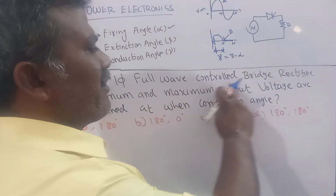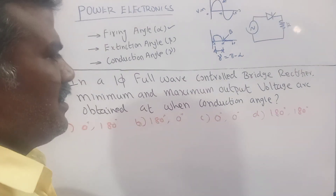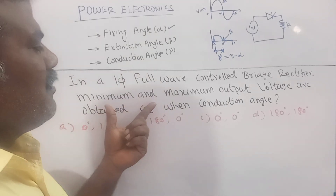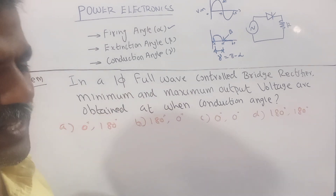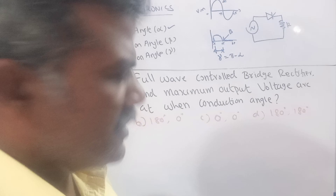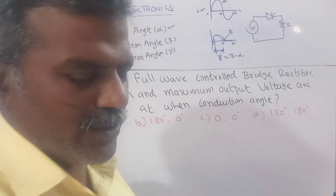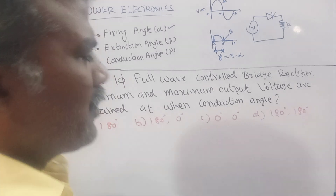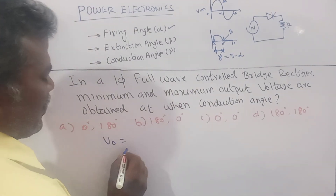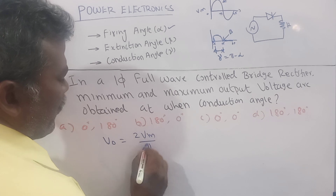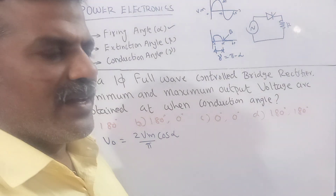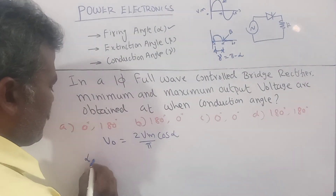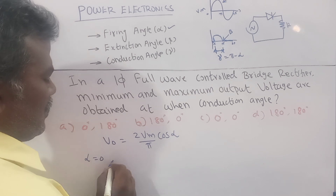For a single phase full-wave controlled bridge rectifier, the minimum and maximum output voltage are obtained based on the conduction. The output voltage formula is: Vout = (2Vm / π) × cos(alpha), where alpha is the firing angle. When alpha equals 0 degrees...